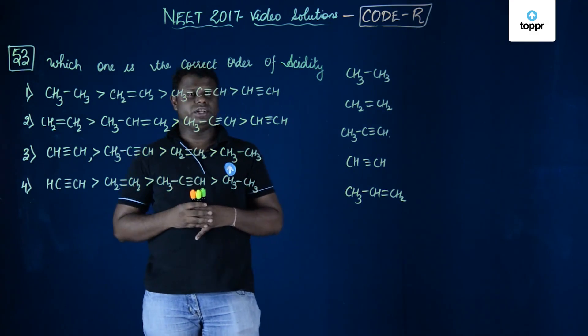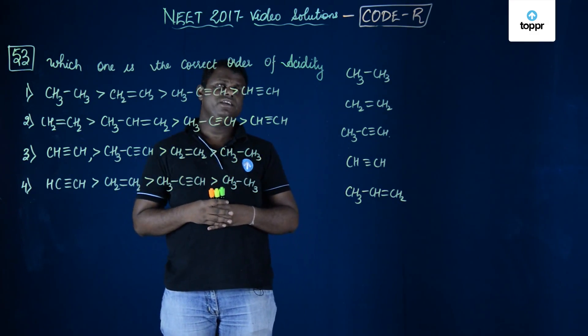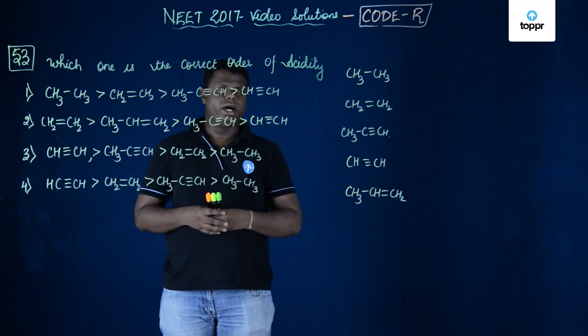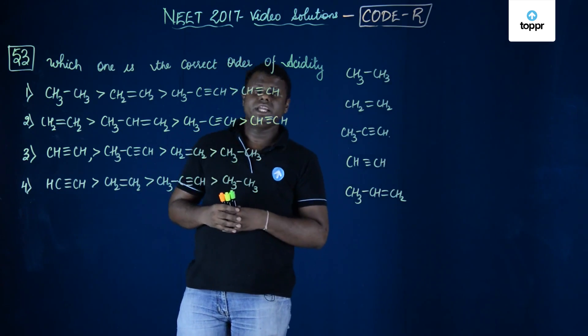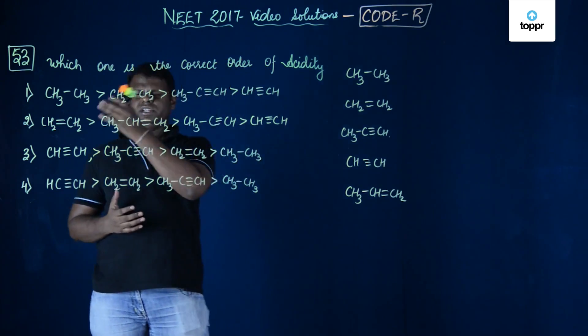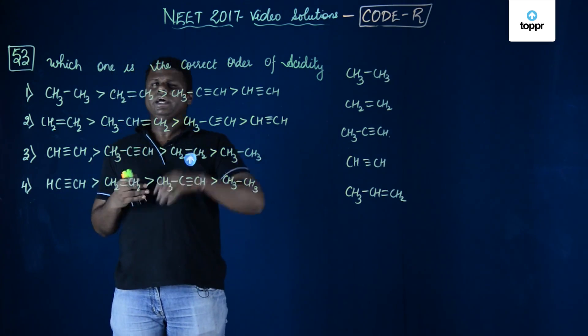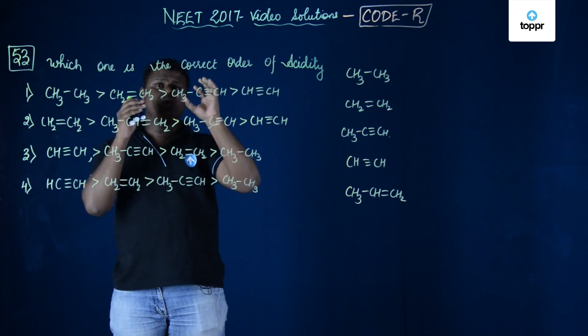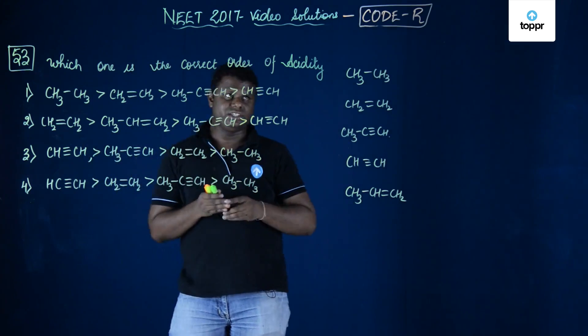Now let's move on to question number 53 of the NEET 2017 video solutions code R. You have been given the list of compounds, a list of certain organic compounds, and you are supposed to answer which is the correct order of acidity.